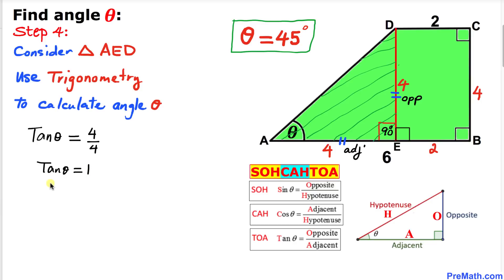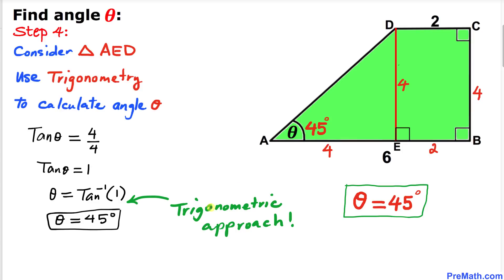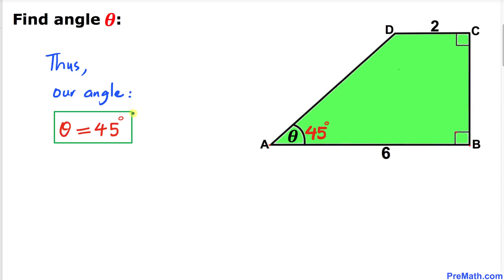So tangent of theta equals 1. Therefore theta = arctan(1), and using a calculator theta equals 45 degrees. That was our trigonometric approach. Thus our angle theta turns out to be 45 degrees. Thanks for watching and please don't forget to subscribe to my channel for more exciting videos.